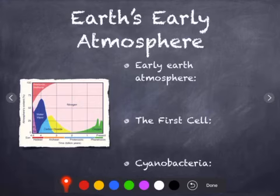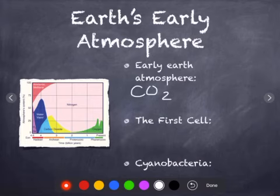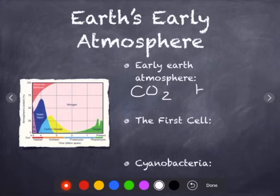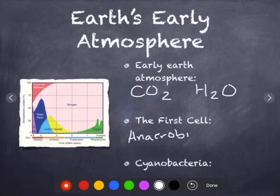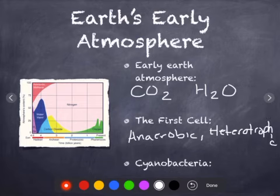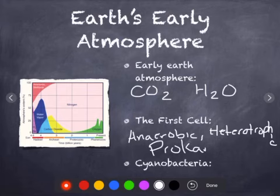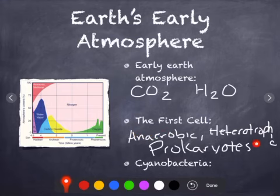In the earliest ages of development, when living things were first coming around, our atmosphere was composed mostly of CO2, methane, and water vapor — but mostly carbon dioxide. Our first cells were anaerobic, meaning they do not use oxygen. They were heterotrophic, consuming other molecules. And they were prokaryotes, meaning they did not have a nucleus.